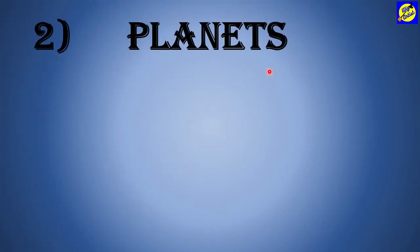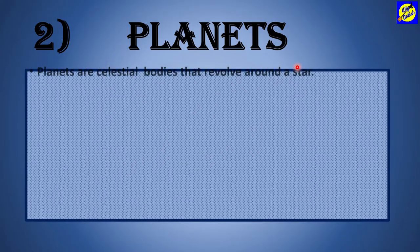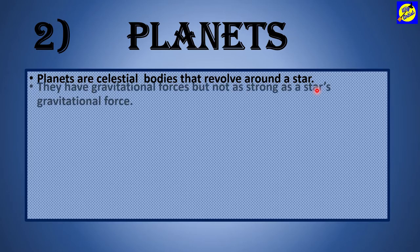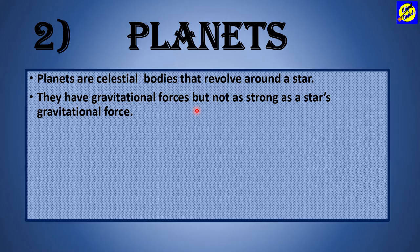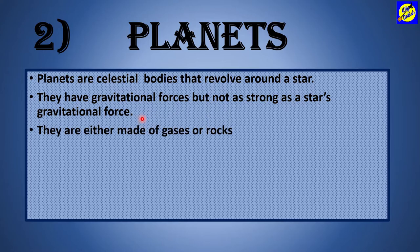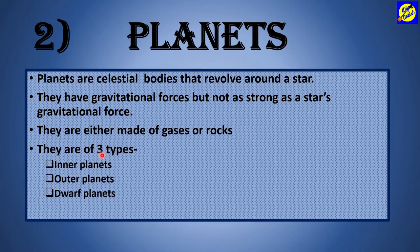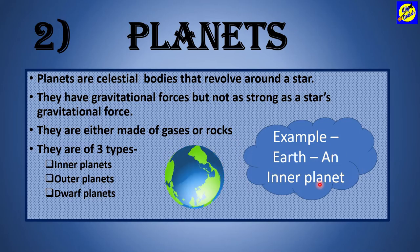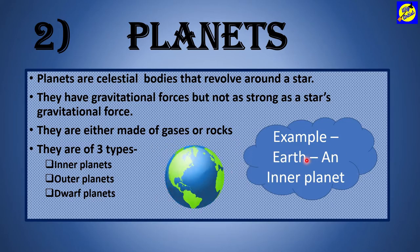Second: planets. Planets are celestial bodies that revolve around a star. They have gravitational forces, but not as strong as a star's gravitational force. They are either made of gases or rocks. They are of three types: inner planets, outer planets, and dwarf planets. For example, Earth is an inner planet.